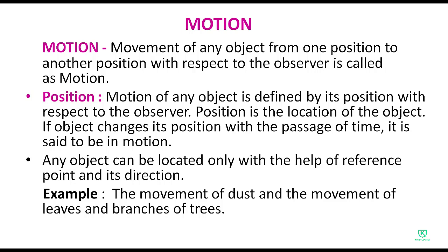Position kya hota hai — kahan pe object located hai. Initial position woh hoti hai jahan pe object pehle se maujood hai. Jaise hi usne move karna start kiya aur woh doosri position pe pahuncha, use hum final position kahenge. If an object changes its position with the passage of time, it is said to be in motion.